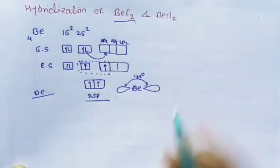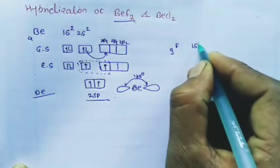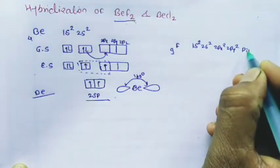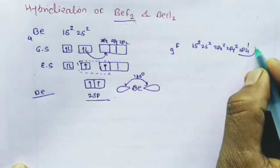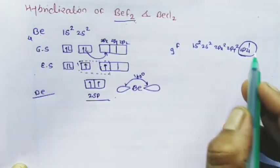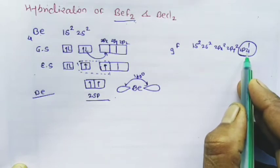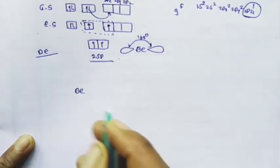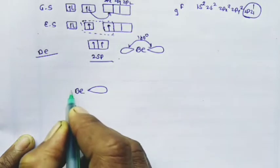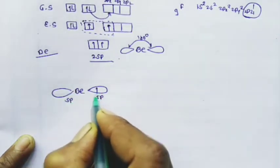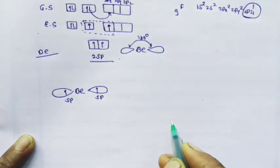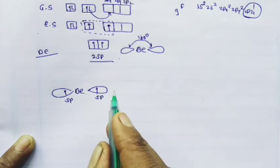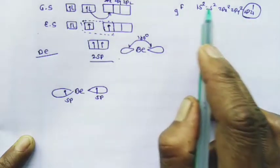We write the electronic configuration of the fluorine atom. The atomic number of fluorine is 9, so its configuration is 1s², 2s², 2px², 2py², 2pz¹. In this fluorine atom, the 2pz is a half-filled orbit — it contains 1 unpaired electron. Therefore, this 2pz orbit is involved in the formation of the sigma bond. Beryllium contains 2 SP hybrid orbitals, each with 1 unpaired electron.